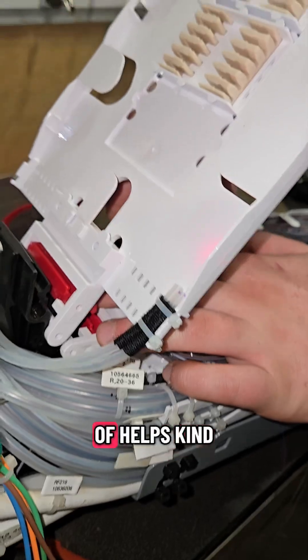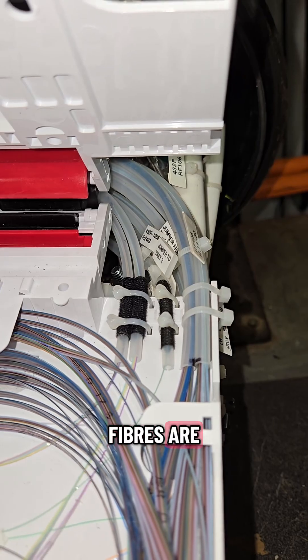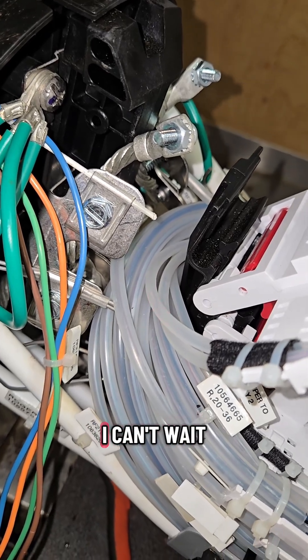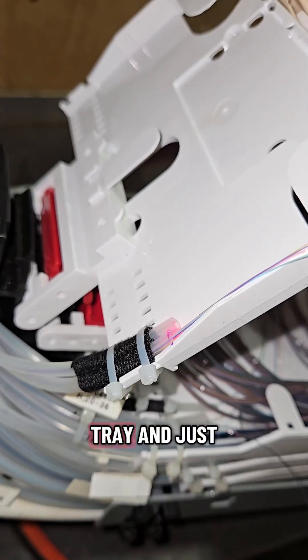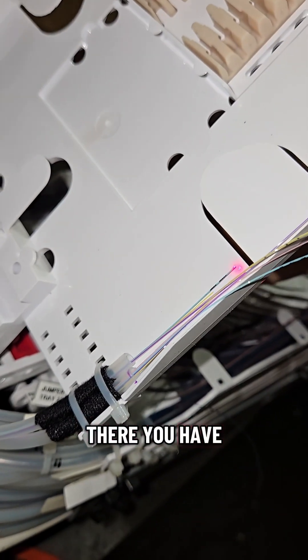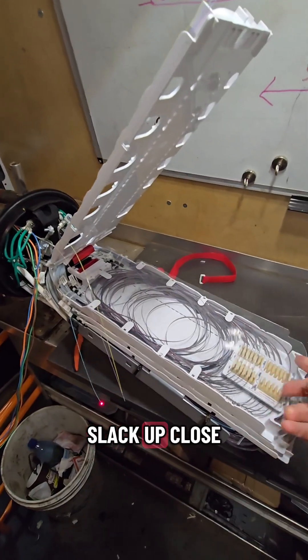Here you can kind of see the red light, how it helps let you know where your fibers are. Working on the second set here, almost done. I can't wait to be out of that ribbon tray and just working up in this nice clean tray. There you have it, the second set is here. Pull the slack up, close that ribbon tray.